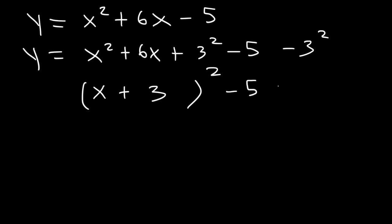Outside, we have negative 5 minus 9. So in vertex form, it's x plus 3 squared minus 14. So we can clearly see that the vertex is negative 3, negative 14.